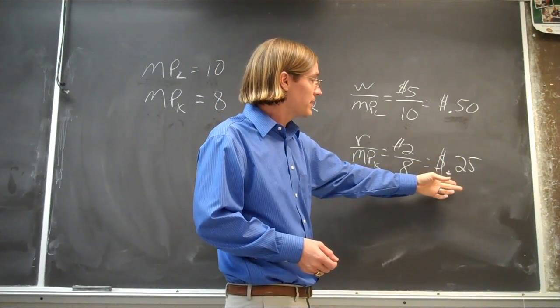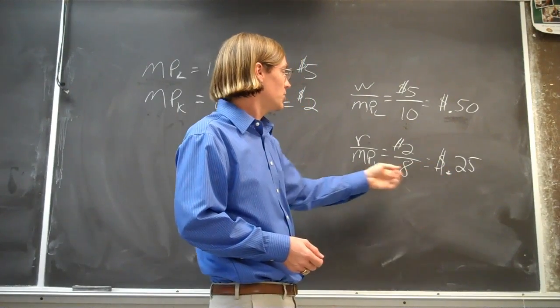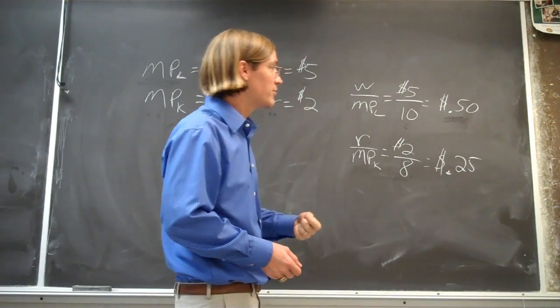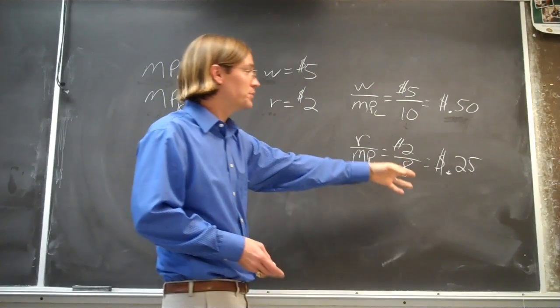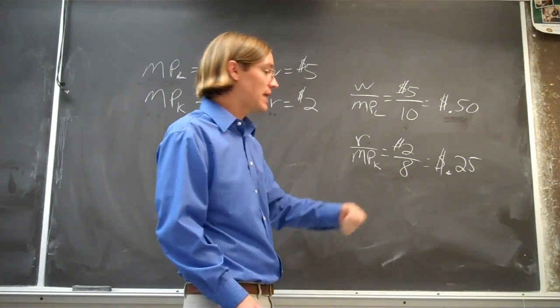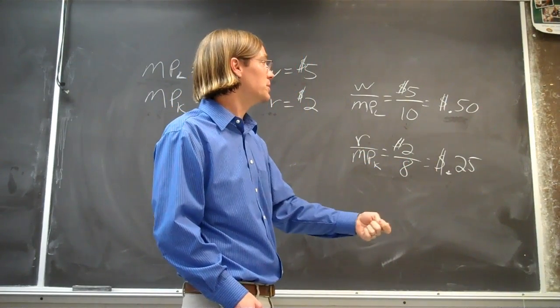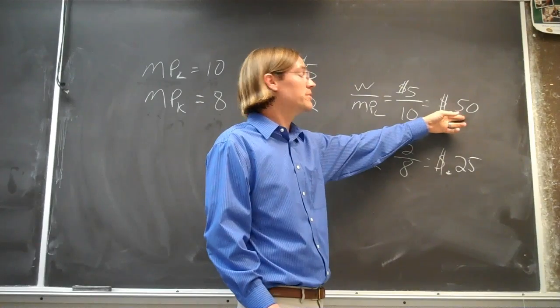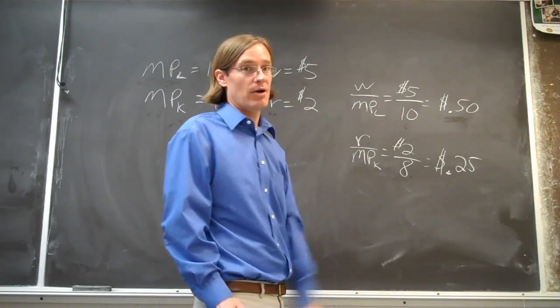You're getting a better deal with your capital. You're getting more bang for your 25 cents. With your 25 cents here, you're getting that marginal unit, one additional unit. With 25 cents, you're only getting half of a unit of output.